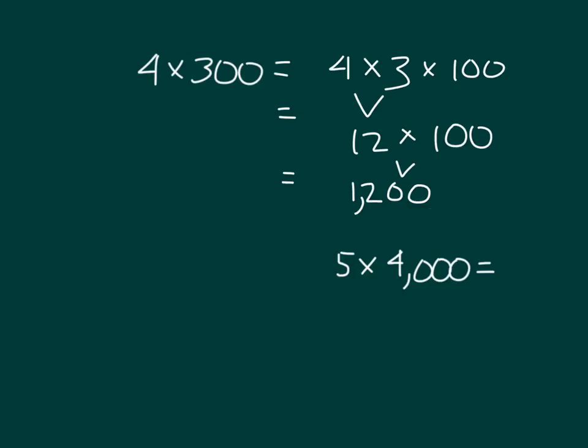4 three hundreds is 12 hundreds, which also can be written as that there. Count by three hundreds: 300, 600, 900, 1,200. Yeah, that's it right there.